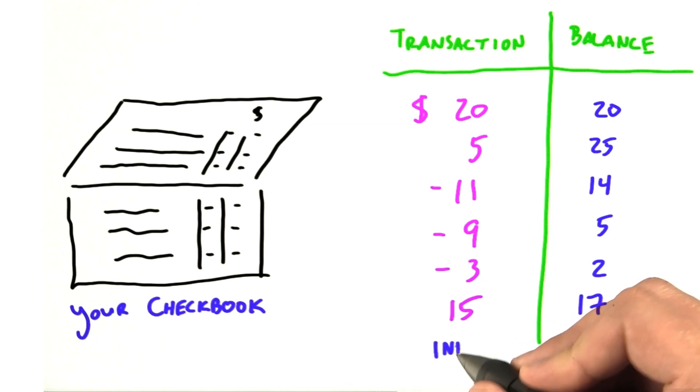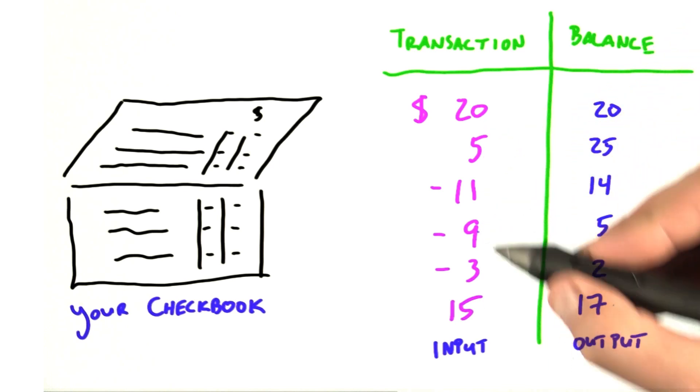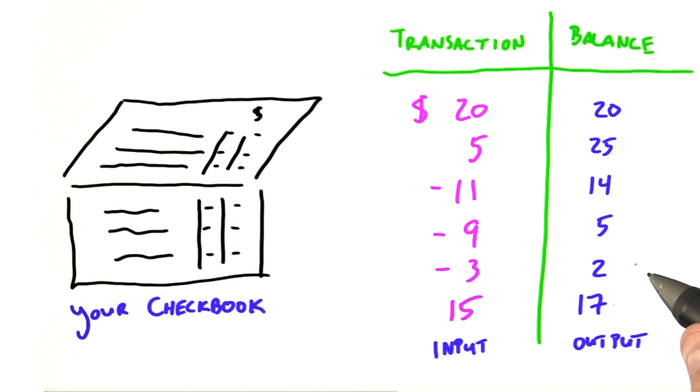Now, the input to scan is this column of transactions, and the output of scan is like your bank balance. What you can see is that at any given time, your balance is the cumulative sum of all the transactions that you've seen so far. Scan here is calculating a running sum of its input. That's a perfectly cromulent way to think about scan. So now let's turn to the mathematical description.